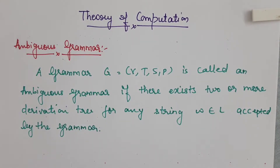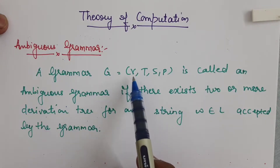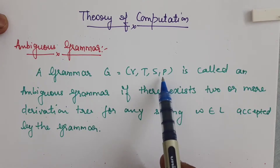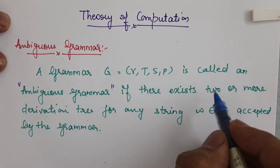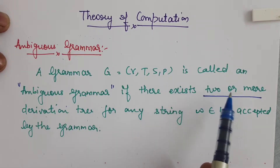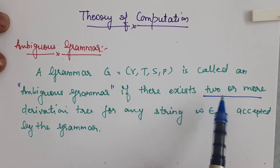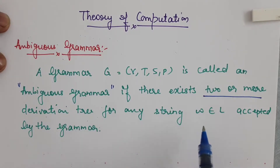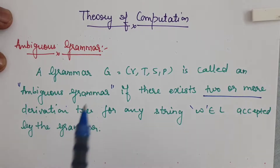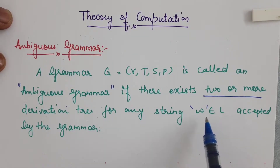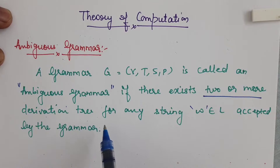Grammar G, which is equal to V, T, S, P — that means it has the set of variables, set of terminals, the starting symbol S, and the production rule P — is said to be an ambiguous grammar if there exist two or more derivation trees for any string w that belongs to the language L accepted by the grammar. So for even a single word w, if we are able to generate more than one derivation tree, then we say that the grammar is ambiguous.